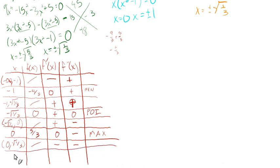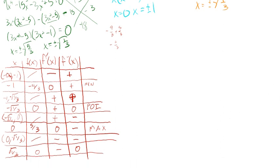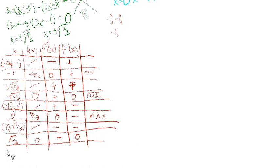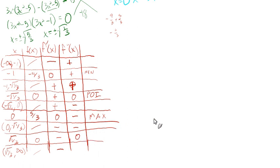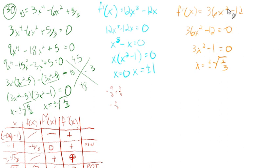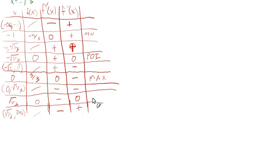On (0, √(1/3)): f′ switches to negative (just passed a maximum). f″ is still negative. At x = √(1/3): f = 0 (x-intercept), f′ is negative, f″ = 0. Testing x = 1 in f″: 36 - 12 = 24, positive — f″ switches from negative to positive, confirming a point of inflection at (√(1/3), 0).